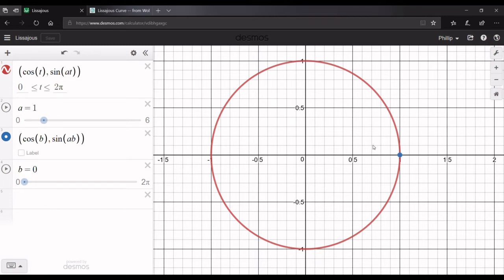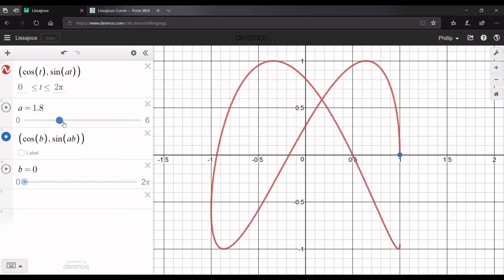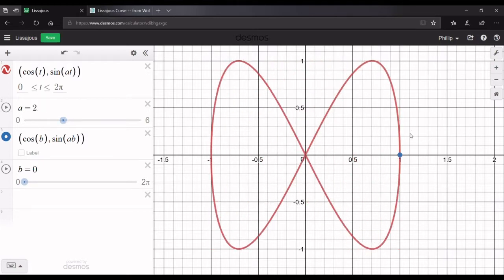So if a is 1, the y values will oscillate one time when the x values oscillate one time. And if we change a to 2, then the y values will oscillate twice, while the x values oscillate once.